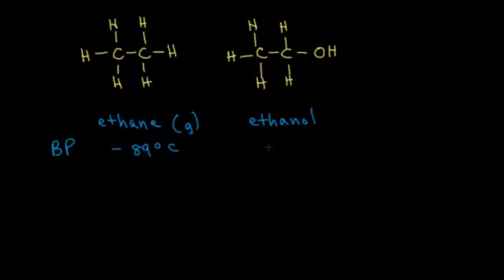Ethanol, however, has a much higher boiling point, somewhere around 78 degrees Celsius. Since room temperature is around 20 to 25, the boiling point of ethanol is much higher than room temperature, so at room temperature and pressure, ethanol is a liquid — it hasn't boiled yet. These large differences in boiling points can be attributed to intermolecular forces. For ethane, the only intermolecular force is London dispersion forces, which are the weakest, so it's relatively easy to pull apart two ethane molecules, accounting for the very low boiling point.